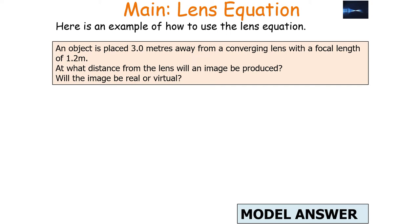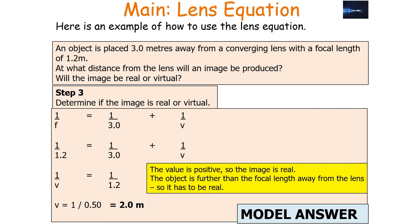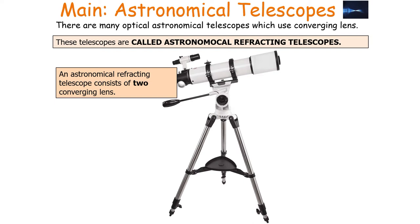Example: an object is placed 3 metres from a converging lens with a focal length of 1.2 metres. Using 1/f = 1/u + 1/v, substituting the values gives V = 2.0 metres. Since V is positive, the image is real — which makes sense because the object is further away than the focal length.